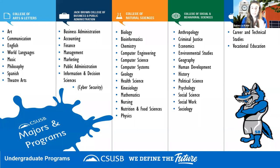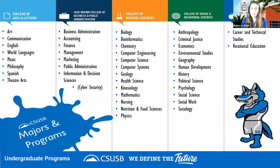Each dean is typically an expert in their field and works with faculty to maintain accreditation and academic excellence. When academic advisors or faculty refer to 'the College of Natural Science' or 'the College of Education,' this is what they mean — a specific academic division within the larger university.